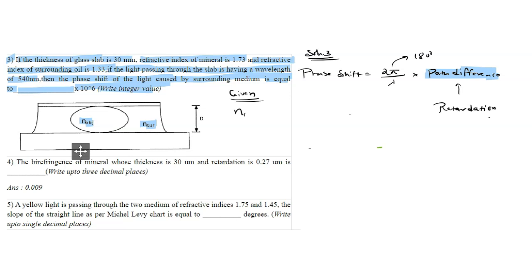The refractive index of the object is given as 1.73, and the refractive index of surrounding is 1.33.